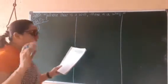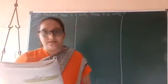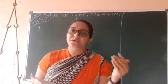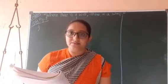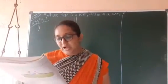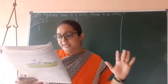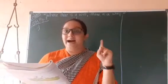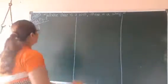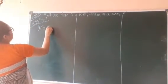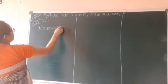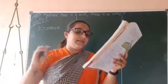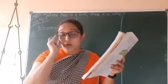Now in question number B, you are supposed to fill in the blanks with the correct words. They have given a definition and from that you have to identify which type of noun it is. First one: nouns that refer to something that can be counted are countable nouns. Second: nouns that denote things that cannot be counted are uncountable.